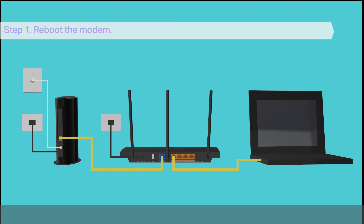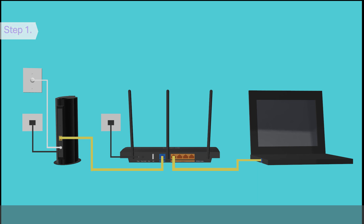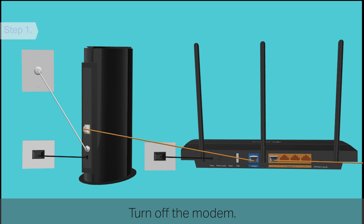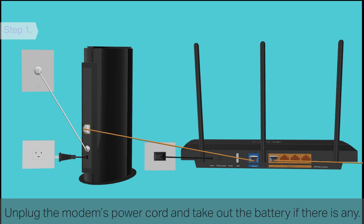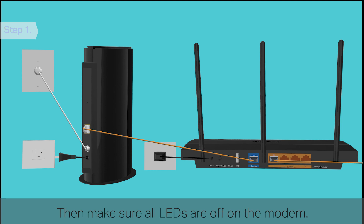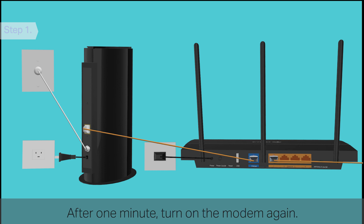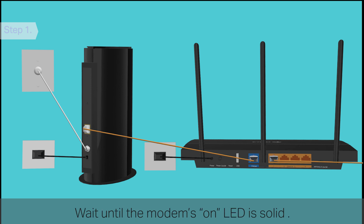Step 1: Reboot the modem. Turn off the modem. Unplug the modem's power cord and take out the battery if there is any. Then make sure all LEDs are off on the modem. After one minute, turn on the modem again. Wait until the modem's ON LED is solid.